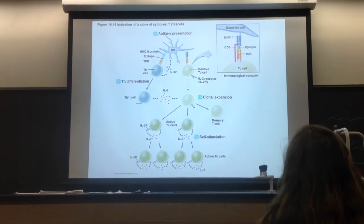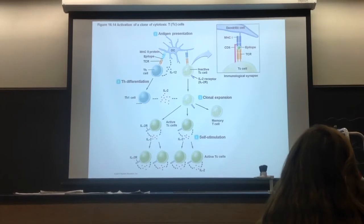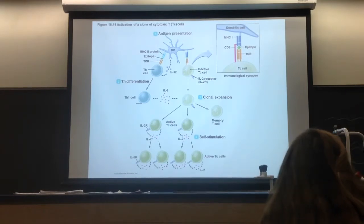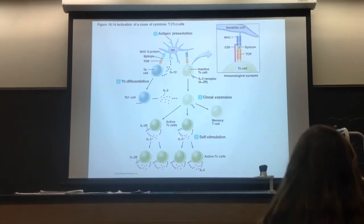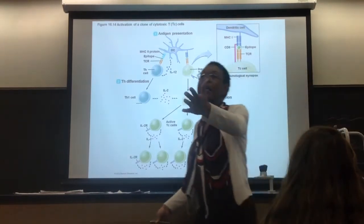Memory cells will actually remember that antigen that started the whole process. So when you see that same antigen again, you don't need that whole song and dance — he knows it and he's going to go right into action and kill it. These guys, once activated, are self-stimulating, meaning they can make more copies of themselves without help from the APC or TH cell.